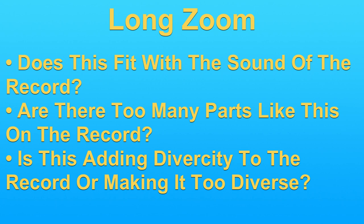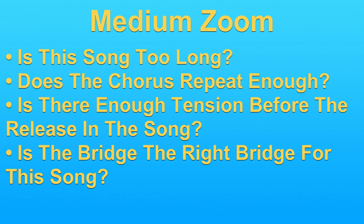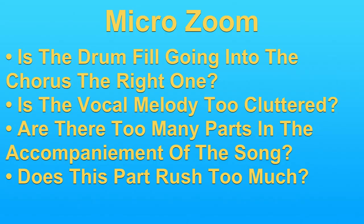When evaluating a record as a producer, I make these evaluations in various zooms. The first being the long zoom: does this fit with the sound of the record? Are there too many parts like this on a record? Is this adding diversity to the record or making it too diverse? The medium zoom is a little more considered by the song: is this song too long, does the chorus repeat enough, is there enough tension built before the release, is the bridge the right bridge for this song? The micro zoom is much more about the details: is the drum fill going into the chorus right, is the vocal melody too cluttered, are there too many different parts in the accompaniment section, does this part rush too much?